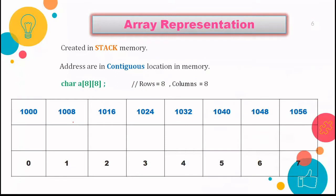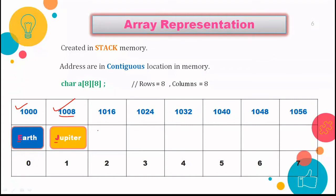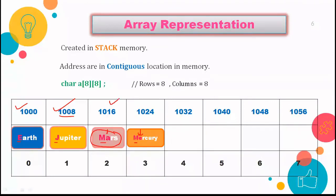Let's better understand it with the representation. The first address is 1000, where we are storing Earth — it starts with E. The next planet is Jupiter, and 1000 + 8 = 1008, so Jupiter is stored at address 1008. Then we have Mars at 1016. Both Mars and Mercury start with M, but since A comes before E, Mars is stored before Mercury.